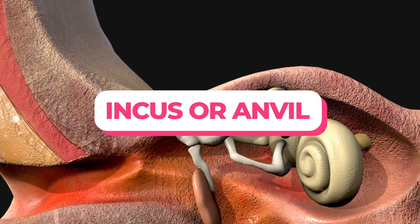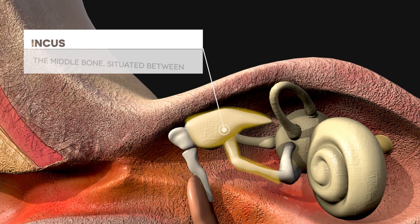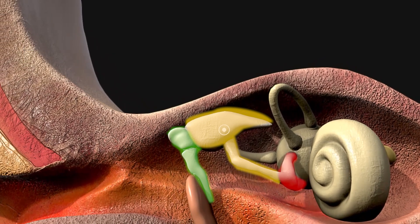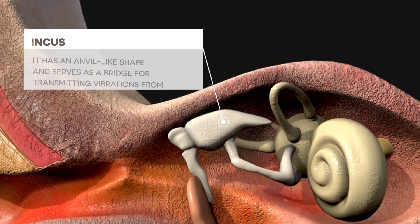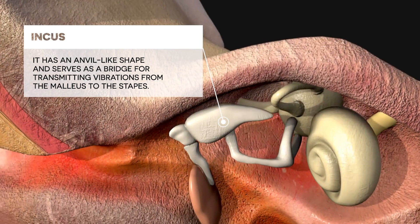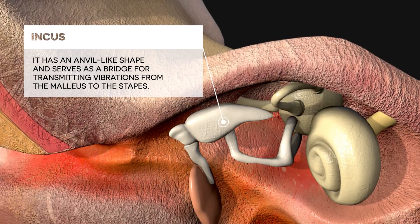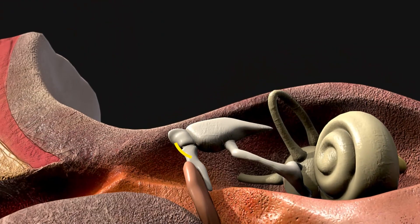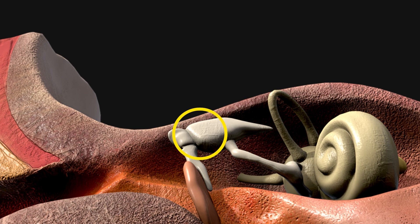The incus, or anvil, is the middle bone situated between the malleus and stapes. It has an anvil-like shape and serves as a bridge for transmitting vibrations from the malleus to the stapes. The joint between the malleus and incus allows efficient transmission and amplification of these vibrations.